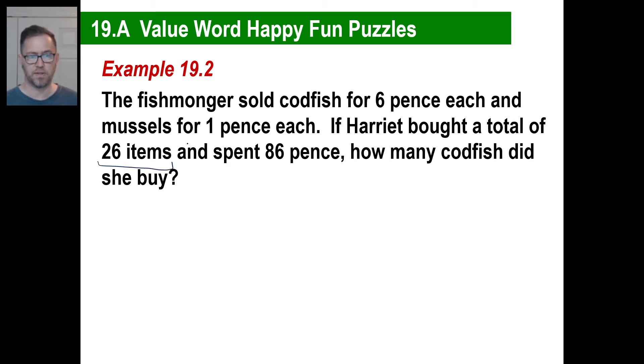He sold codfish for six, mussels were one. She bought a total of 26. Let's do that first. She bought a total of 26. So in other words, the number of codfish plus the number of mussels, that's going to be 26 total, right?